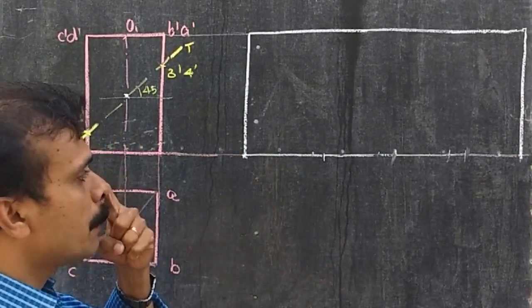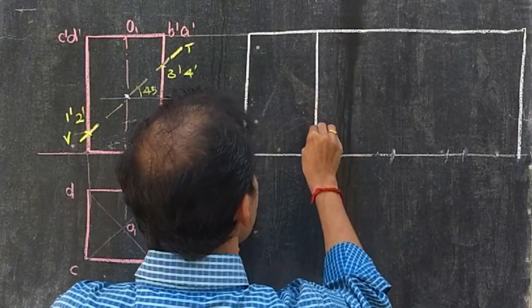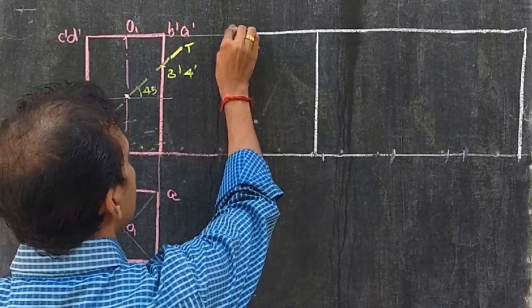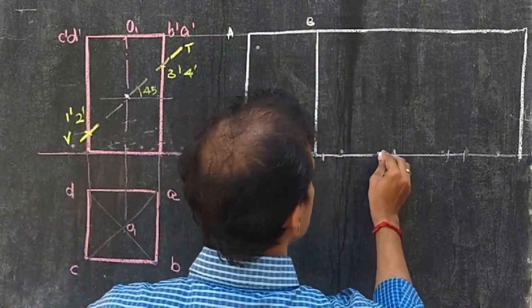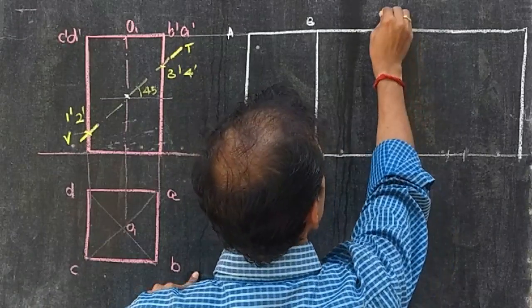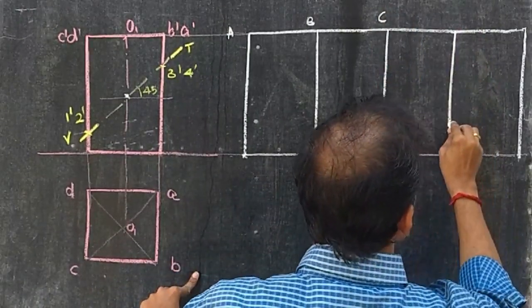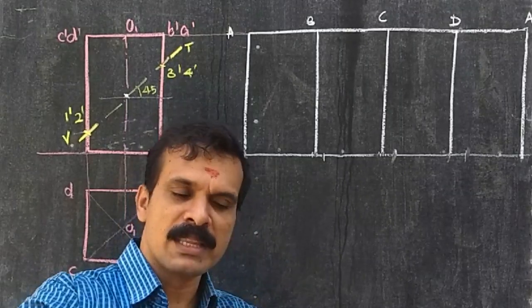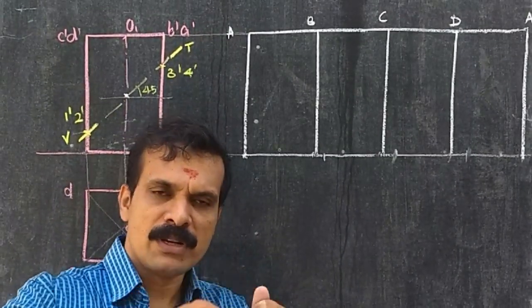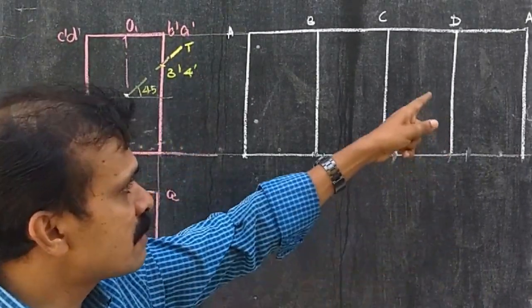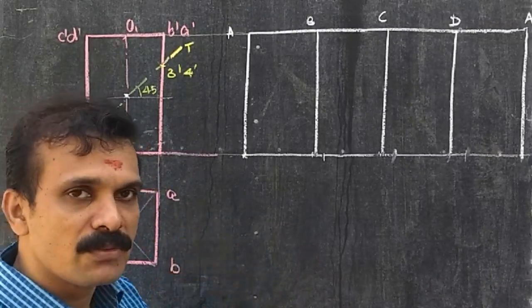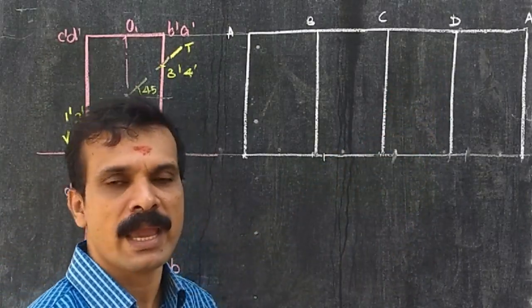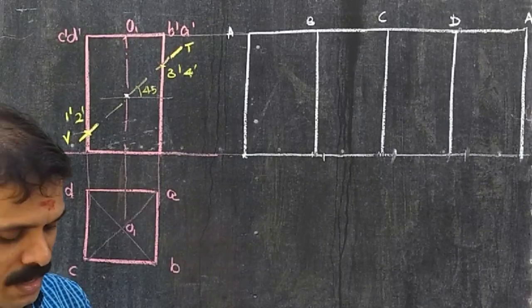This is the development of the prism. Developments are indicated with capital letters: this is capital A, then capital B, then capital C, then capital D. After reaching D, as it is unfolding, the final portion will meet the initial line — the last lateral edge will be A again. So if we start unfolding at point A, it will reach back to point A.